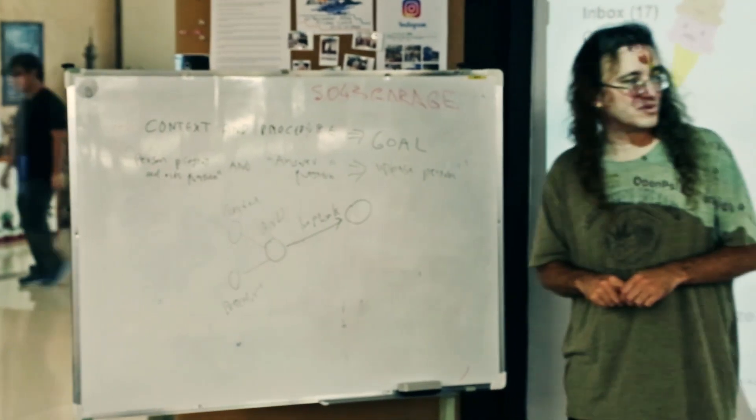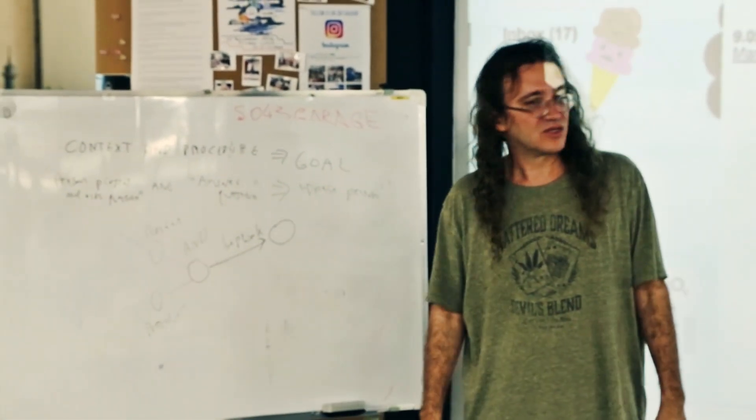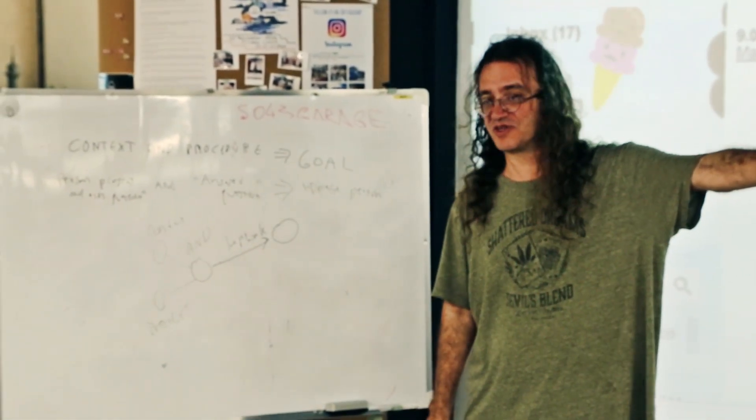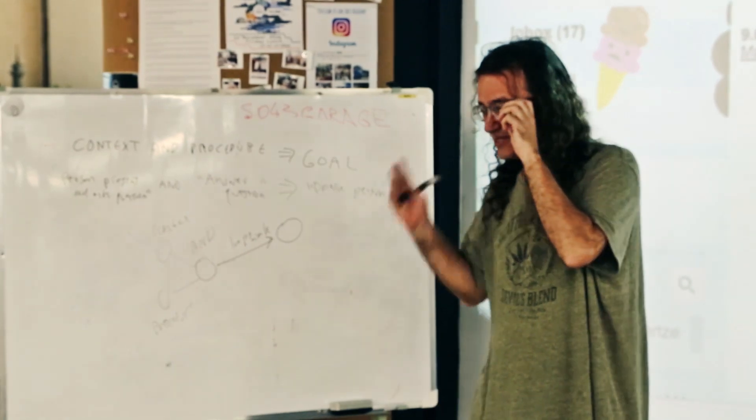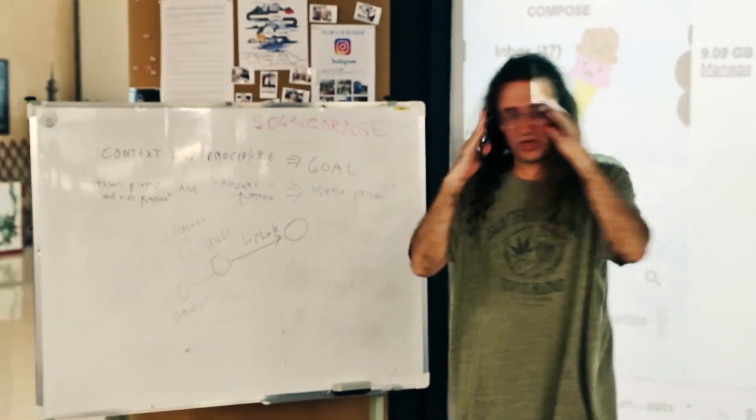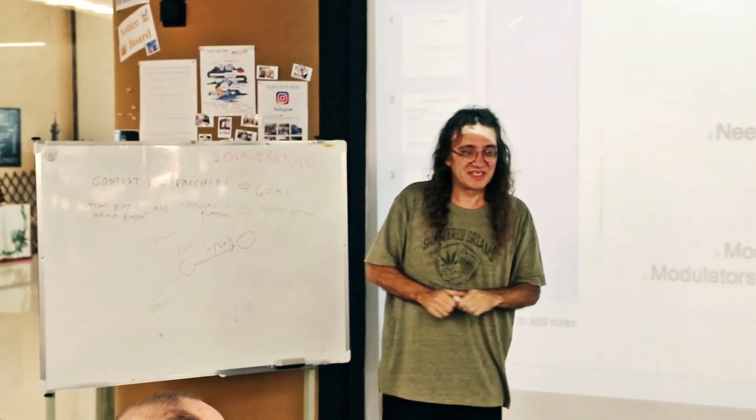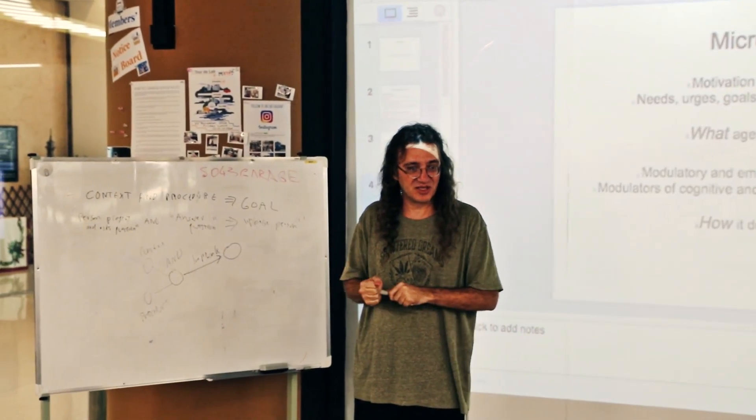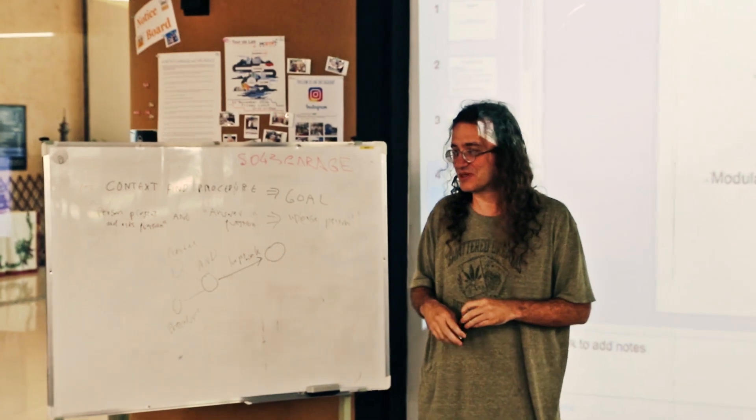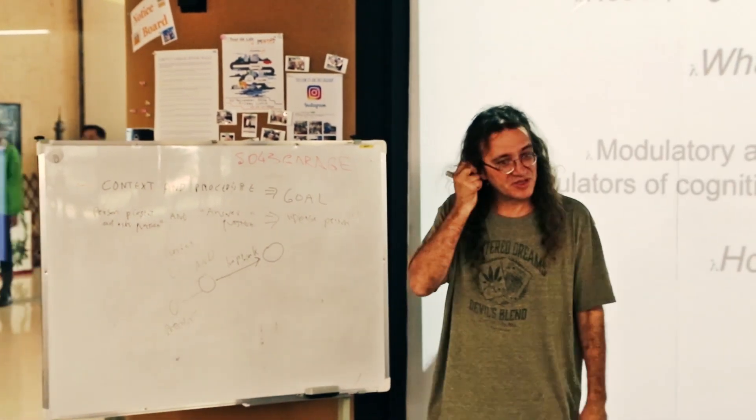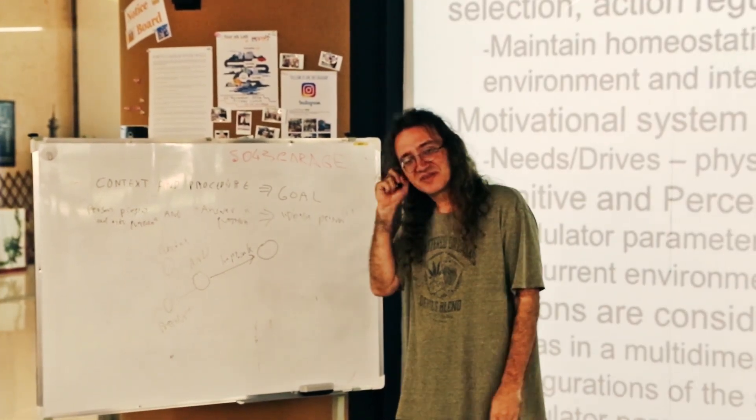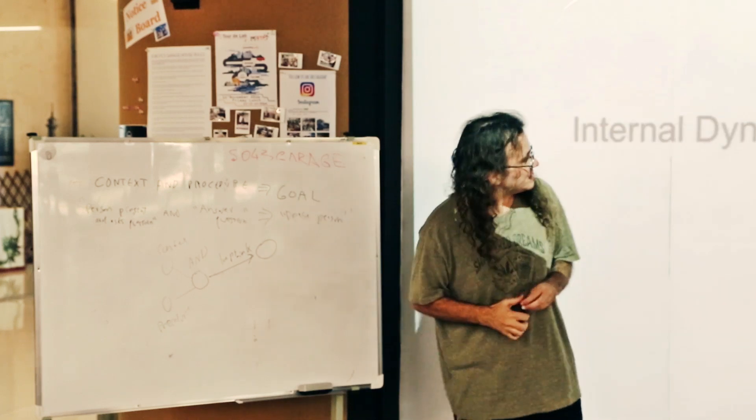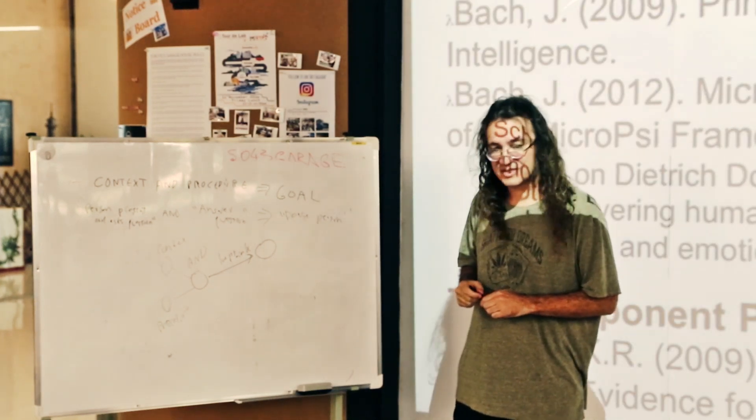Another example would be: a weird noise occurs over there, and the agent looks toward the weird noise. That could satisfy the goal of increasing knowledge or the goal of experiencing novelty, because it looked at that weird noise. So it finds the source of the noise either way.